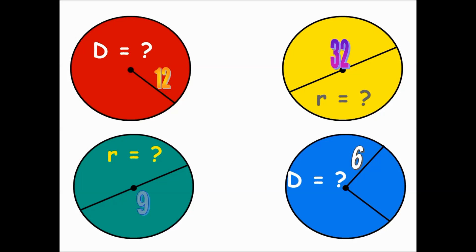If the radius is 12, what is the diameter? The diameter is equal to the radius times 2. So for the red circle, the diameter would be 24. For the yellow circle, the diameter is equal to 32.